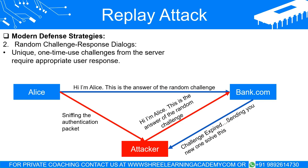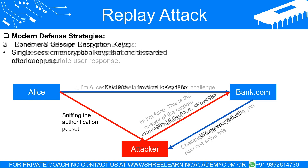Another technique involves using random challenge-response dialogues. When a user tries to authenticate, the server sends a unique challenge, and the user's system must respond correctly to gain access. Since the challenges are random and used only once, a replay attack would fail because the captured response wouldn't match a new challenge from the server. Think of this as a secret handshake — each time you meet a friend, you create a new handshake, so if someone tries to mimic it later, it won't work because you've already changed it.